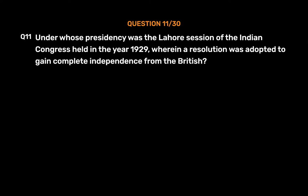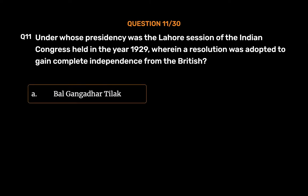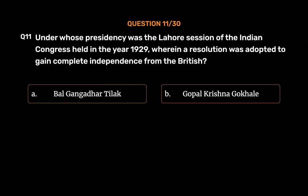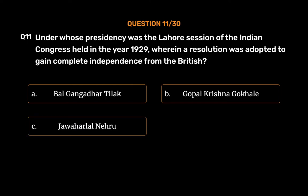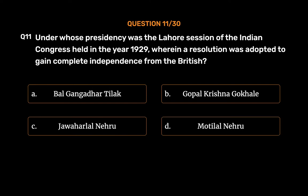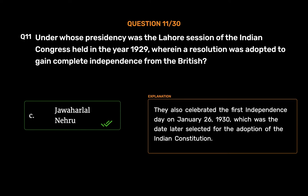Question No. 11. Under whose presidency was the Lahore session of the Indian Congress held in the year 1929, wherein a resolution was adopted to gain complete independence from the British? Option A, Bal Gangadhar Tilak; Option B, Gopal Krishna Gokhale; Option C, Jawaharlal Nehru; Option D, Motilal Nehru. The correct answer is Option C, Jawaharlal Nehru. They also celebrated the first independence day on January 26, 1930, which was a date later selected for the adoption of the Indian Constitution.